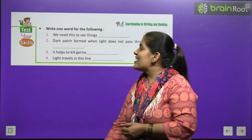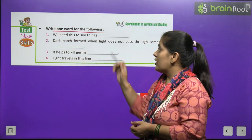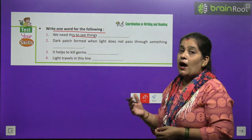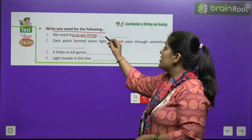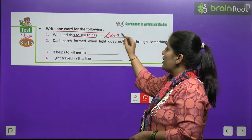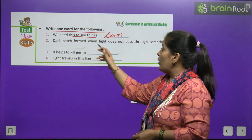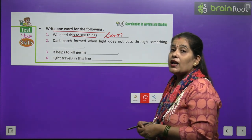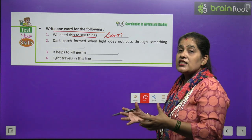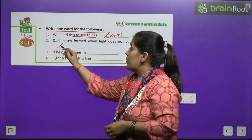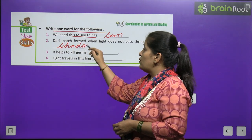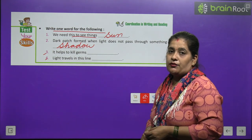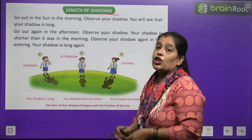Now, time to test your skill. Write one word for the following. We need this to see — cheezon ko dekhne ke liye hume is ki avashyakta padti hai. Answer: Sun — S-U-N. Dark patch formed when light does not pass through something — jab kisi cheez se roshni aar paar nahi hoti, toh dark kya cheez banti hai? Answer: Shadow — S-H-A-D-O-W. Number three and four you will do by yourself.